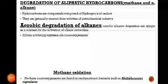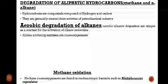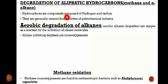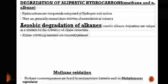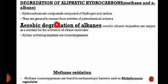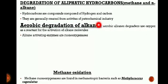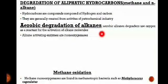Now the degradation of aliphatic hydrocarbons. Hydrocarbons are compounds composed of hydrogen and carbon. Aliphatic hydrocarbons are those hydrocarbons present in the form of chains rather than cycles; they are generally created from the activities of the petrochemical industry. Now let's discuss the aerobic degradation of alkanes. Aerobic alkane degraders use oxygen as a reactant for the activation of alkane molecules, and the alkane-activating enzymes are monooxygenases.